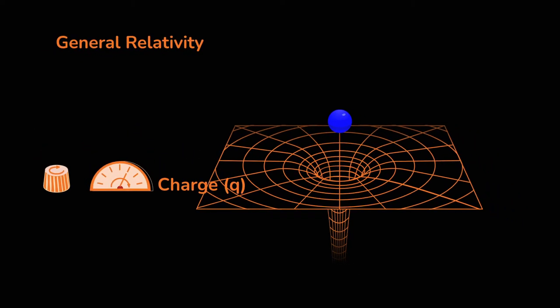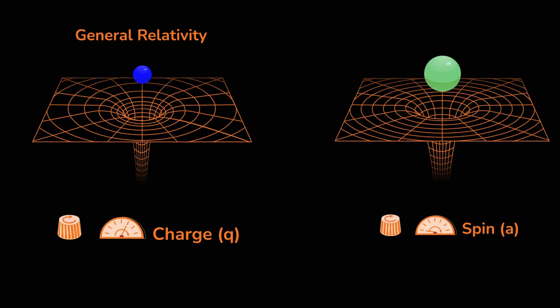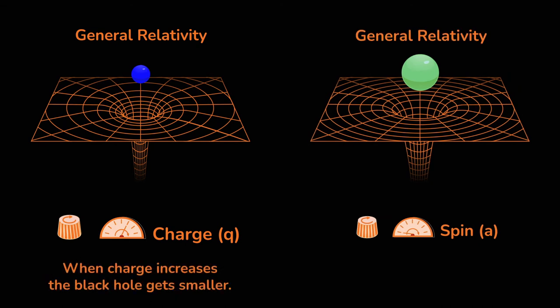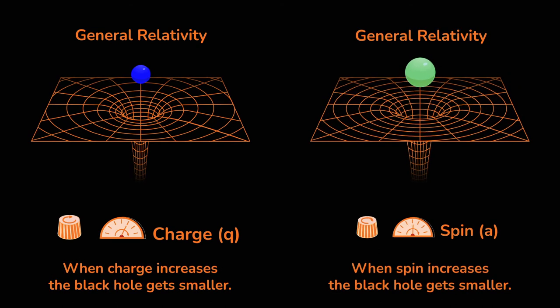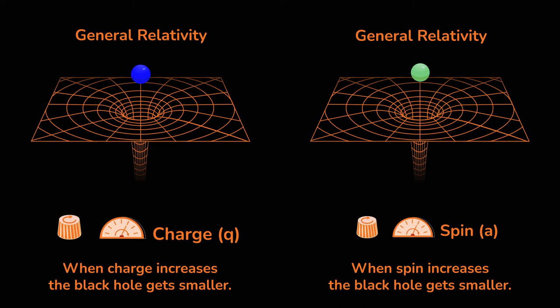The size of the event horizon depends on the mass, spin, and charge. Uncharged and non-spinning black holes are larger than charged or rotating ones.